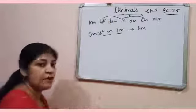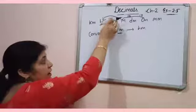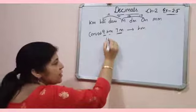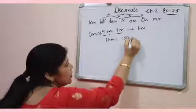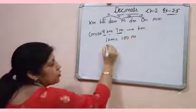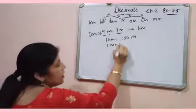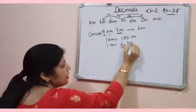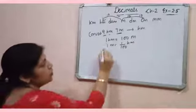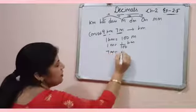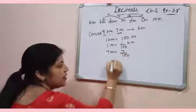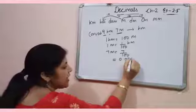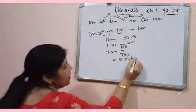Means again you have to divide, and divide by 100. Because 1 hectometer is equal to 100 meter. So 1 meter will be equal to 1 by 100 hectometer. So 7 meter will be equal to 7 by 100. That is 0.07 hectometer.